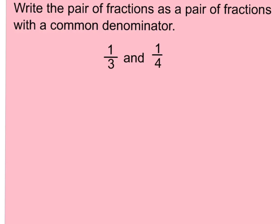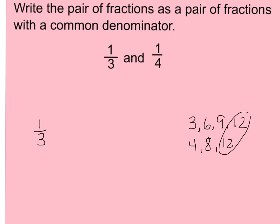So let's write the pair of fractions one-third and one-fourth as fractions with a common denominator. My denominators are three and four — they're not common yet, so we have to make them alike. I'm going to look at one-third and find my multiples: 3, 6, 9, 12. I'm going to stop there because if I listed my multiples of four, I know I'd eventually get to twelve. Four, eight, twelve — I found common multiples. Therefore I can find equivalent fractions with denominators of twelve.